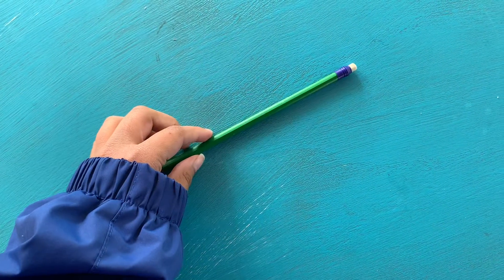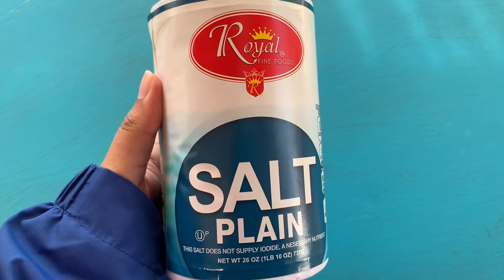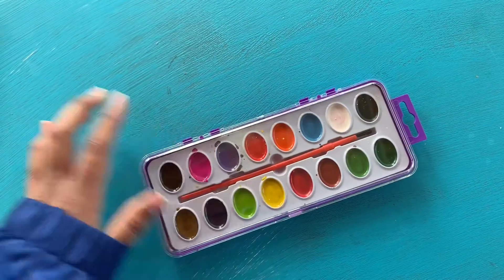First, we're going to need some white construction paper. The reason we're using construction paper is because it's going to soak up most of the water. Next, we're going to need a pencil and some table salt. And last but not least, some watercolors.